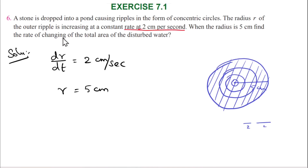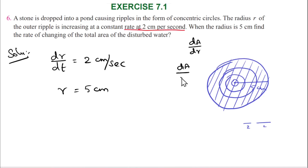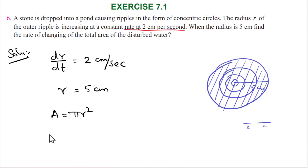The rate of change of area when the water is disturbed is dA/dt. The rate of change of area with respect to radius is dA/dr. But we have to find dA/dt. We know the area of a circle: A = πr².